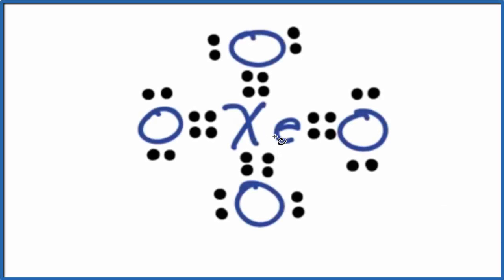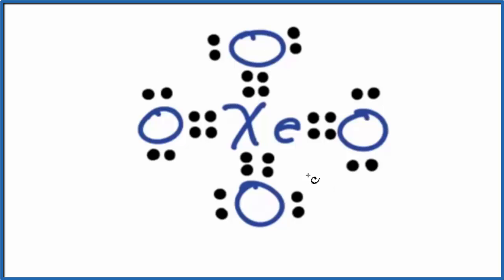In this video, we'll determine the molecular geometry for XeO4, xenon tetroxide. The first thing when finding molecular geometry is you need a valid Lewis structure. This is the Lewis structure for XeO4. If you need help drawing the Lewis structure, there's a link in the description and at the end of this video.